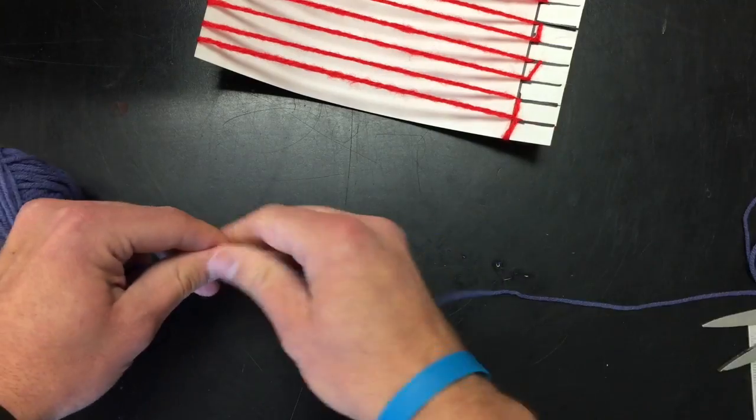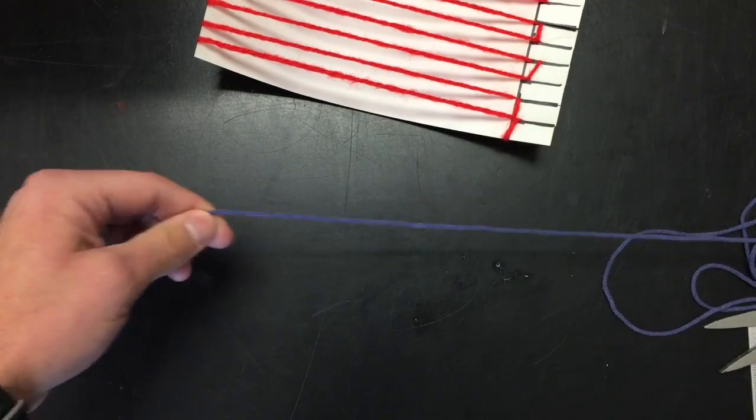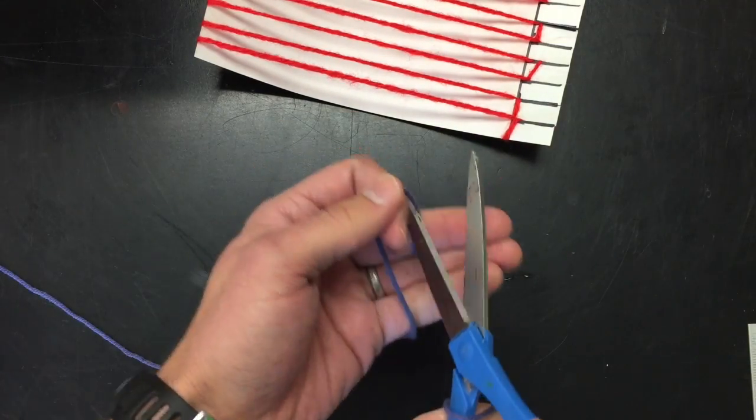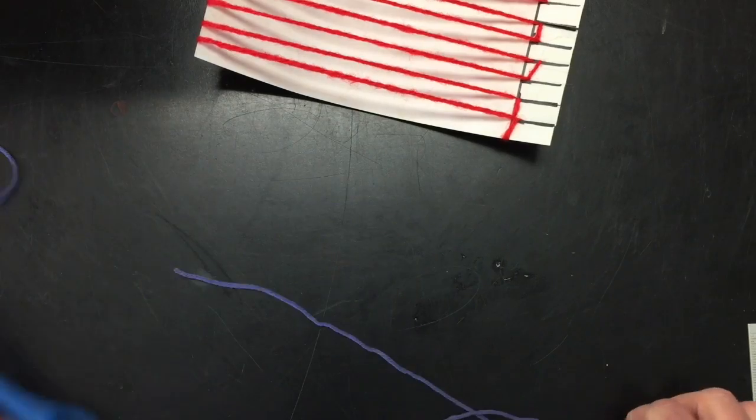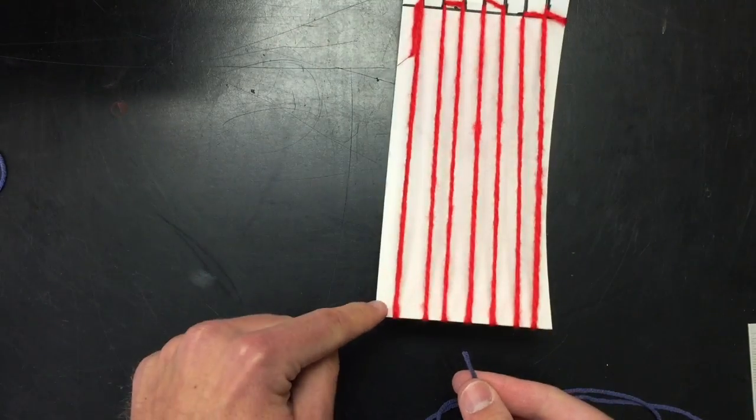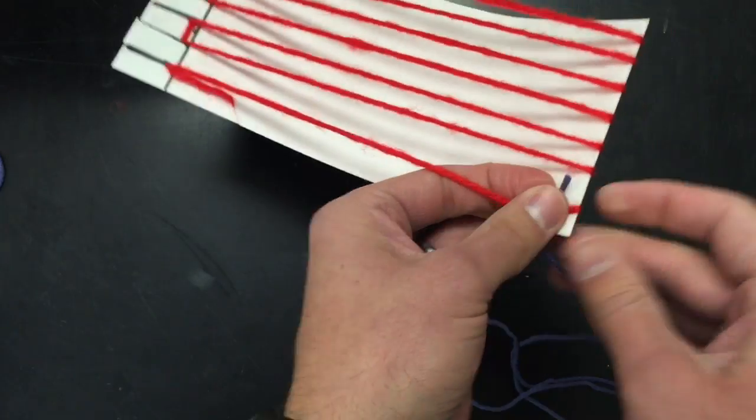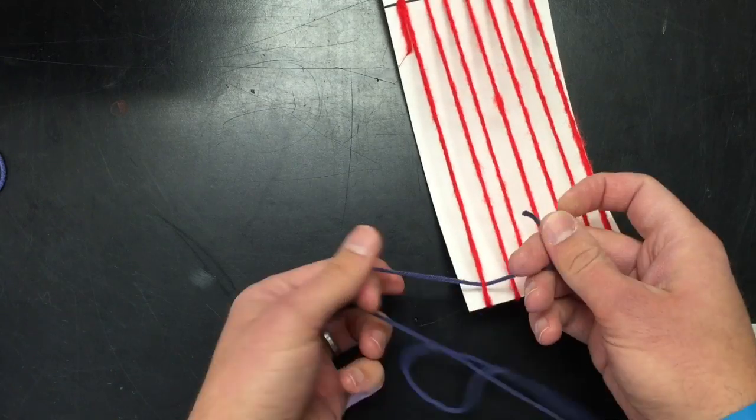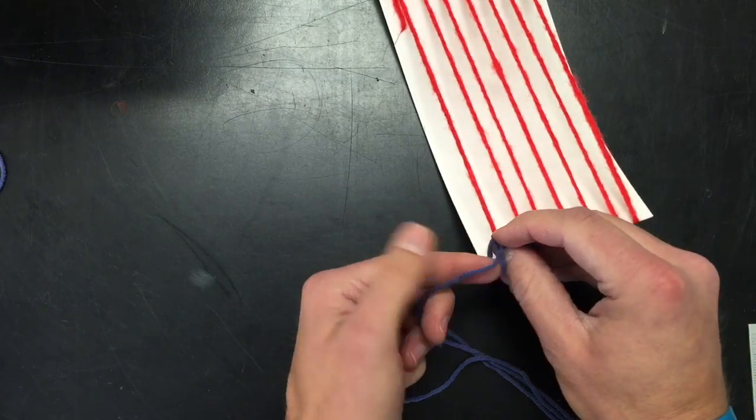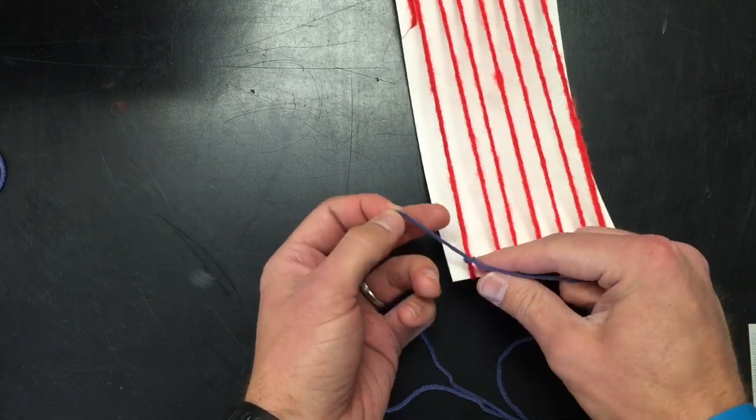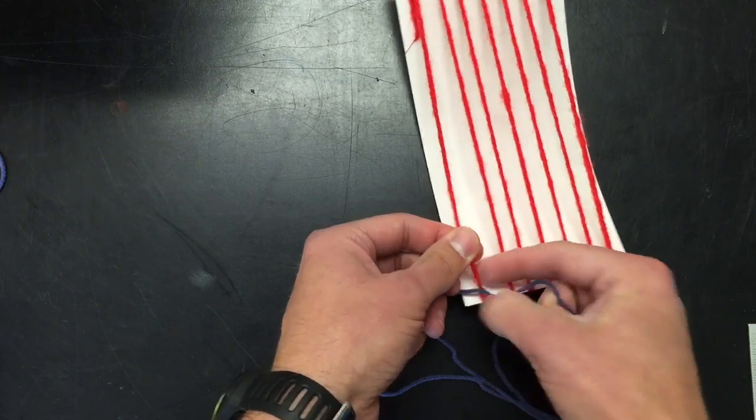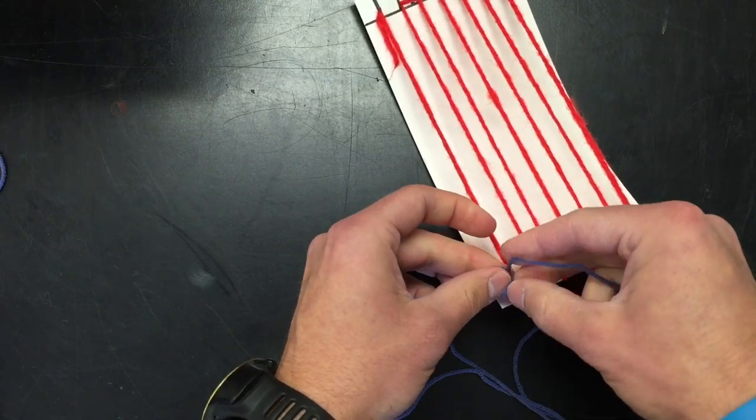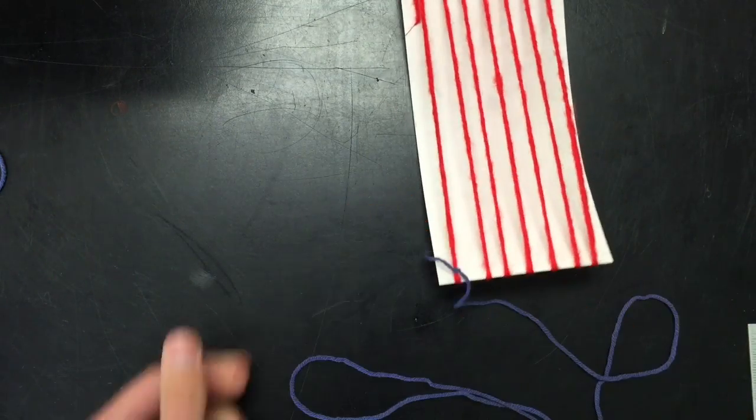Then you need to pull a bunch of yarn out, like probably five or six arm lengths. You can always add more to it later, but it's good to start with a lot. Take that far end and you're gonna tie it in a double knot at the bottom left corner of your loom onto that far string. Slide it all the way down to the bottom if you can, and double knot it. This is where we're gonna start to weave.